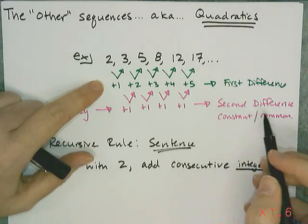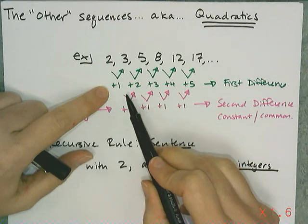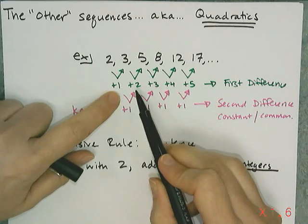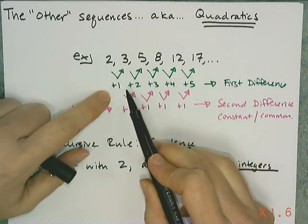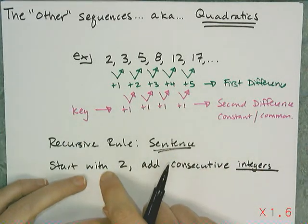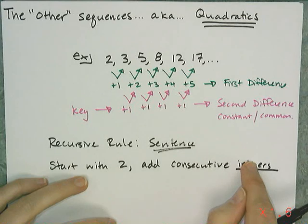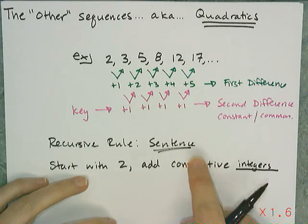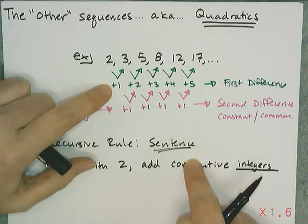That's how you get the second difference being constant, is that you are adding either consecutive integers, like 1, 2, 3, 4, 5, or consecutive evens, like 2, 4, 6, 8, 10. So I'm going to say start with 2, add consecutive integers, but I have to say which integer I start with. And in this case, I start with 1.